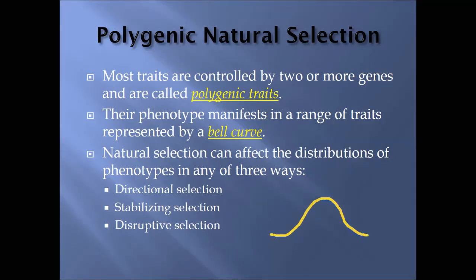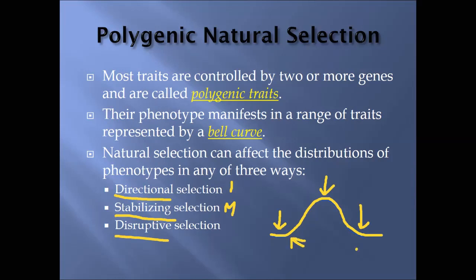So this is a bell curve, where your average is located in the center and your extremes are at either end. As we talk about the different types of selection: directional selection favors one of the extremes; stabilizing selection favors the middle; and disruptive selection favors both extremes while not favoring the middle. I'll give you examples of each one of these.